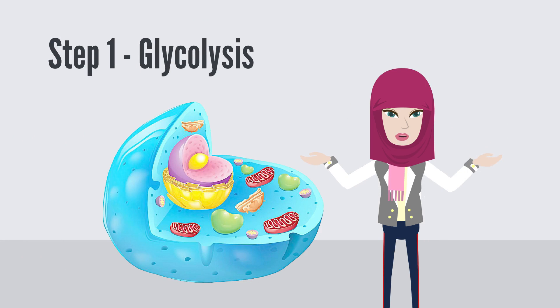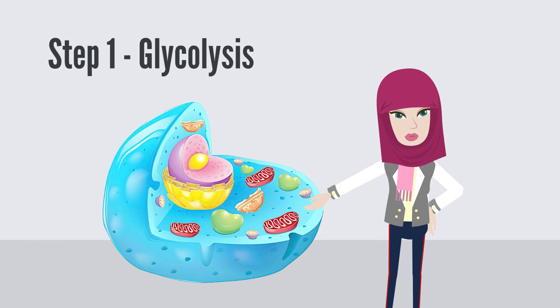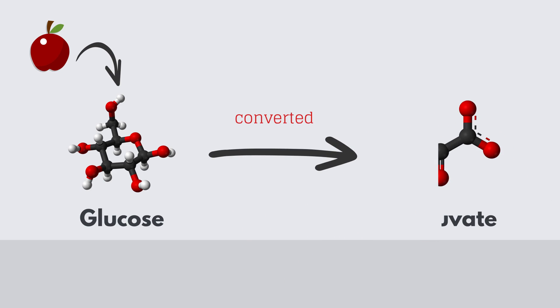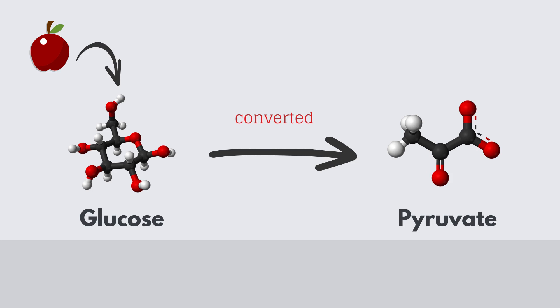First, a process called glycolysis occurs in the cell, in the cytoplasm. This is where glucose obtained from the food that we eat gets converted into a more usable form called pyruvate.